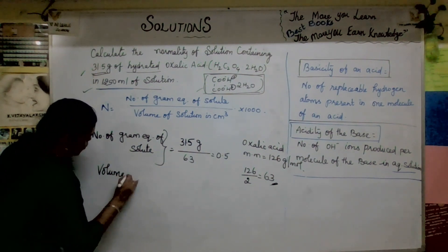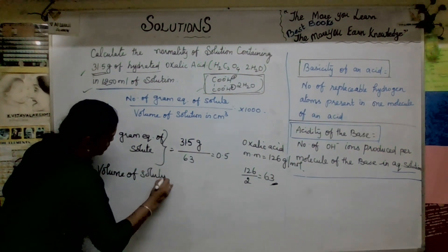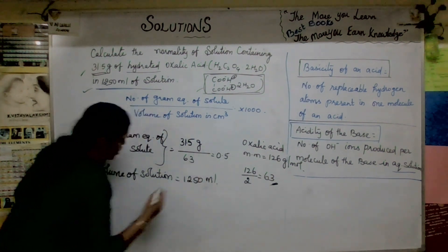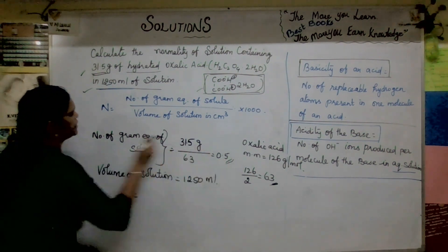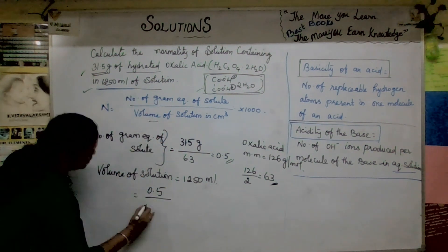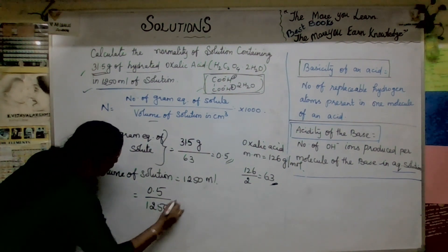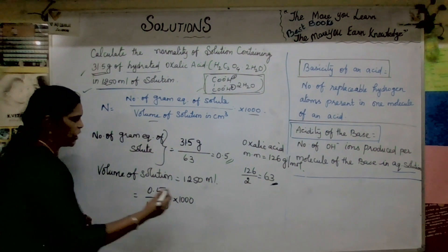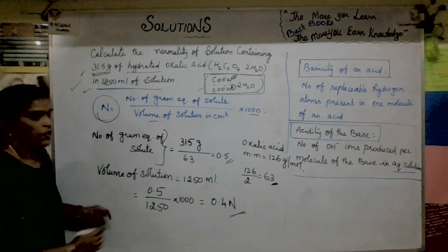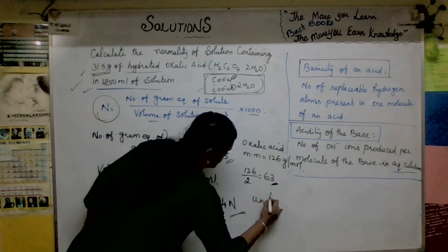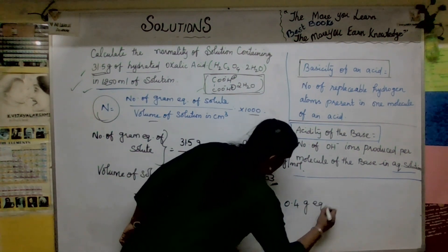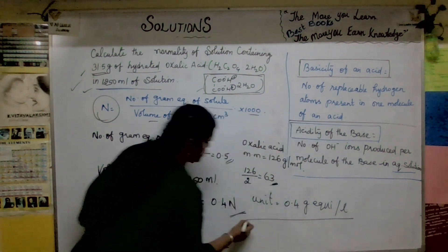Volume of solution is 1250 mL. Applying the formula: normality = 0.5 ÷ 1250 × 1000 = 0.4. The normality of the solution is 0.4 gram equivalents per litre.